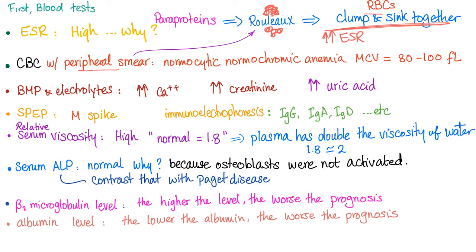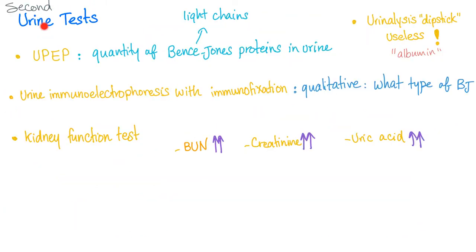Albumin level: the lower the albumin, the worse the prognosis — it is opposite to beta-2 microglobulin. The higher the beta-2 microglobulin and the lower the albumin, the worse the prognosis.